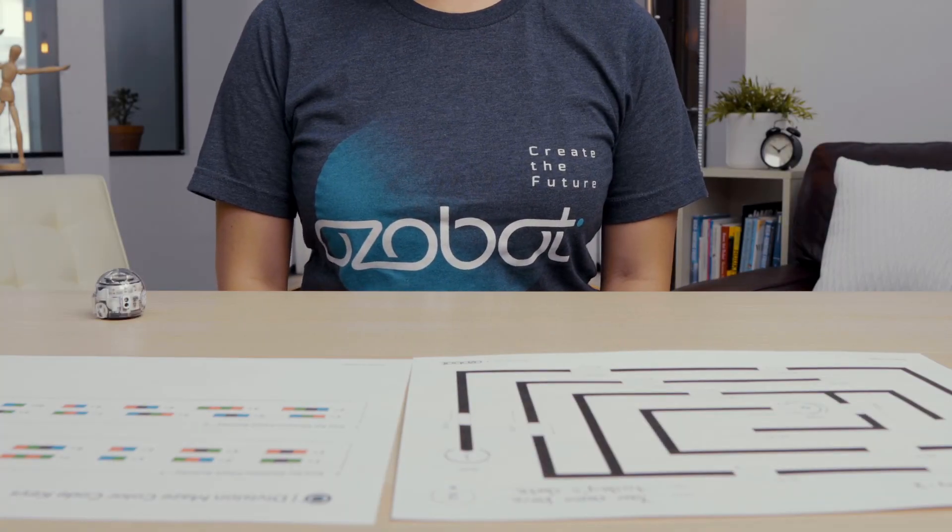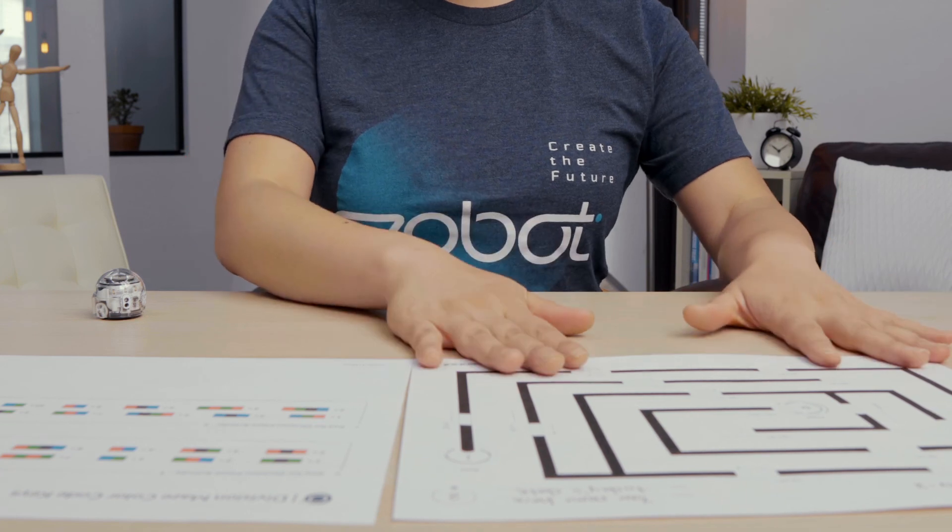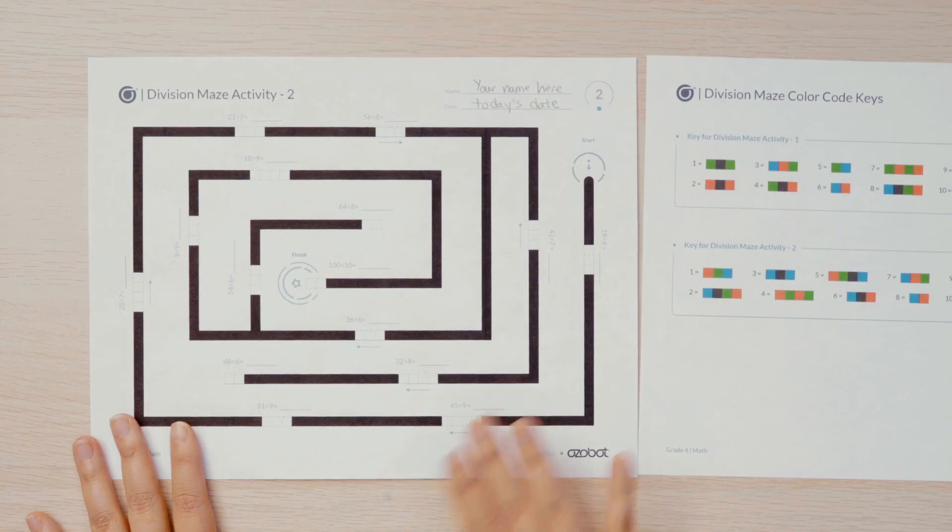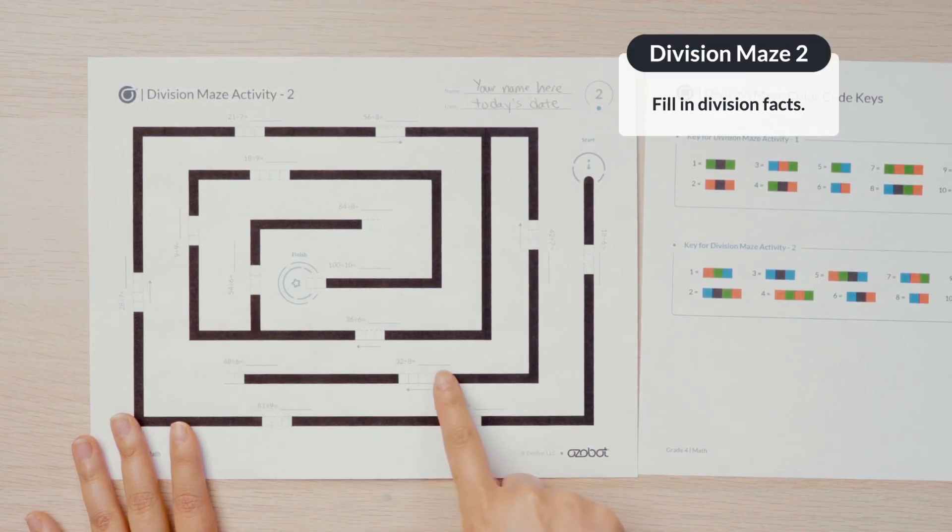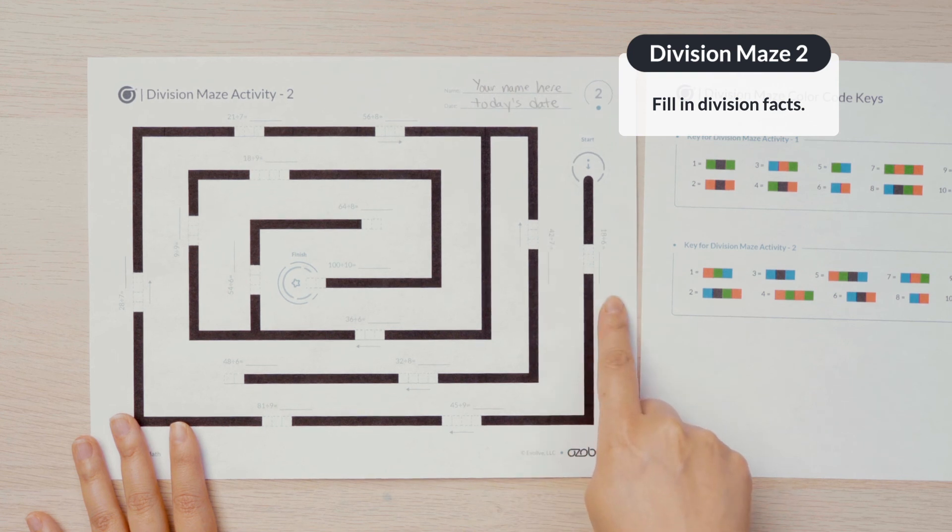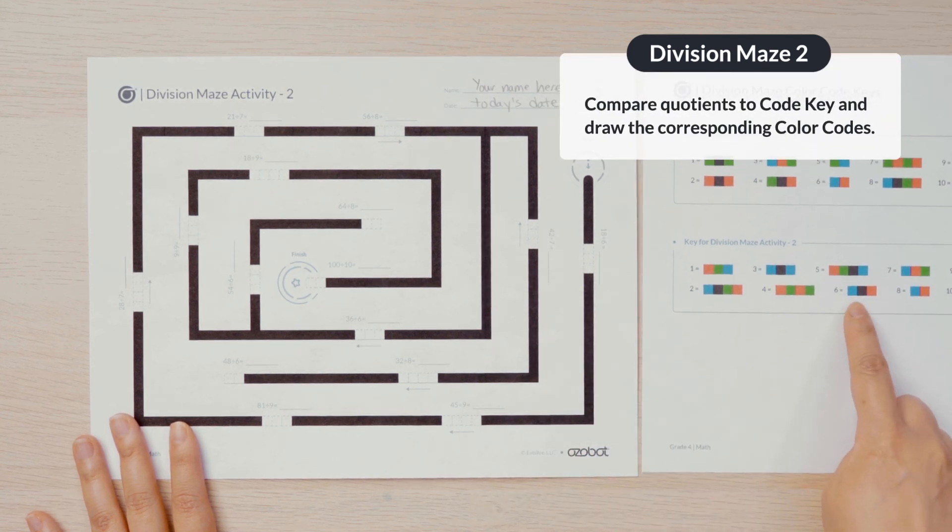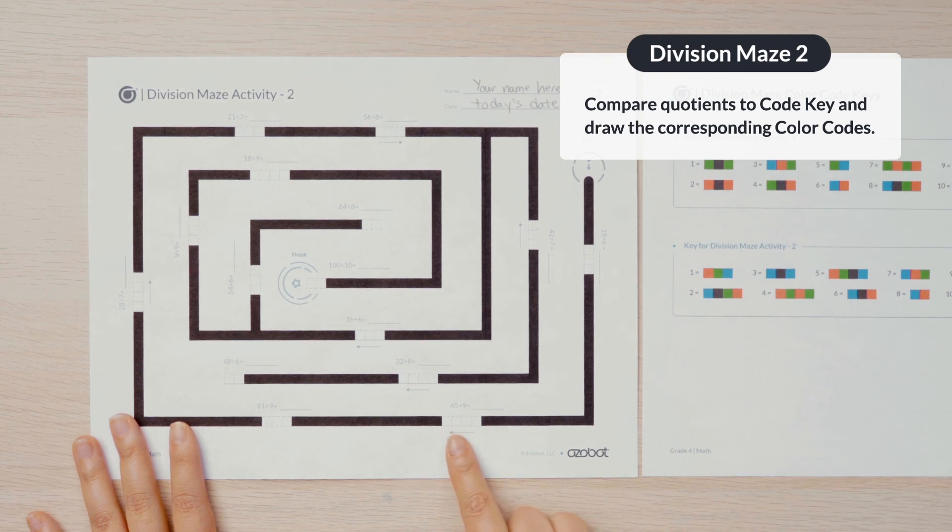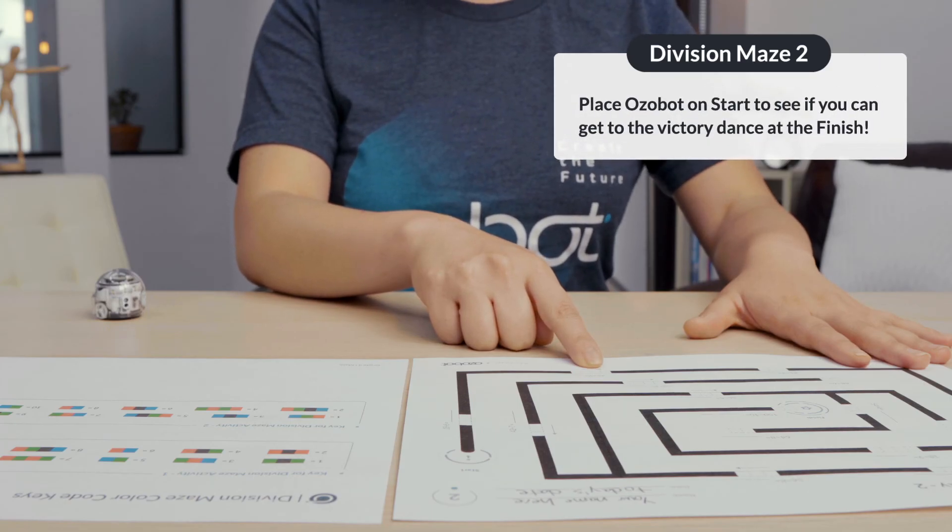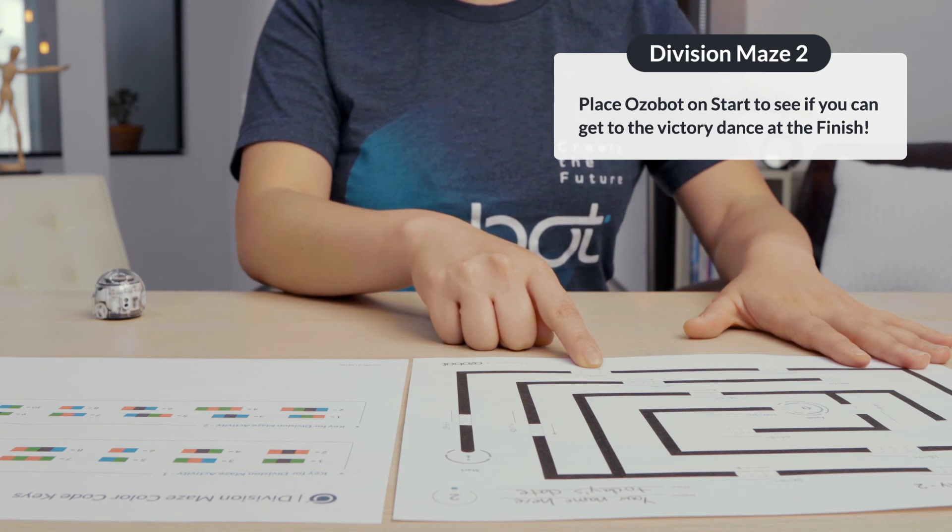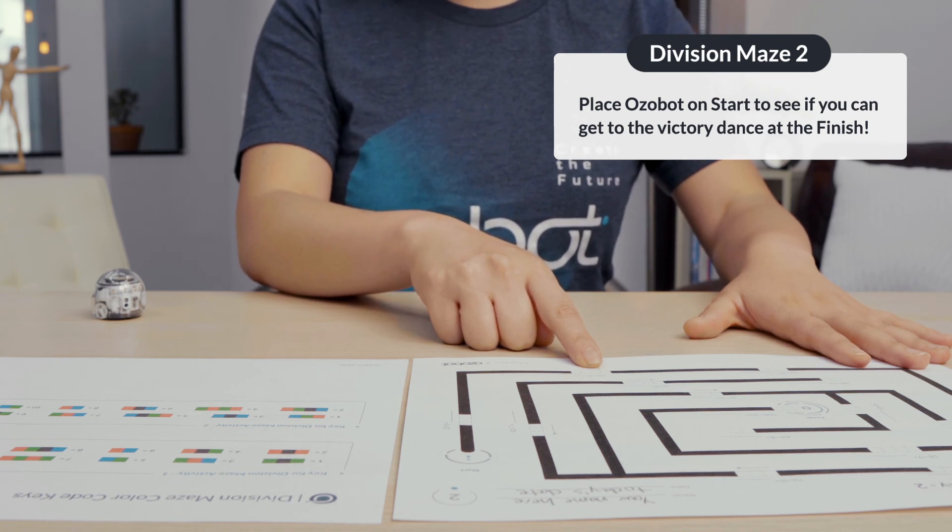Once you're finished with maze 1, move on to division maze activity 2. Fill in the quotients for the division problems. Then compare your quotients to the answer key and fill in the color codes on your maze. Once your codes are filled in, turn on your Ozobot and see if it can get to the victory dance at the finish.